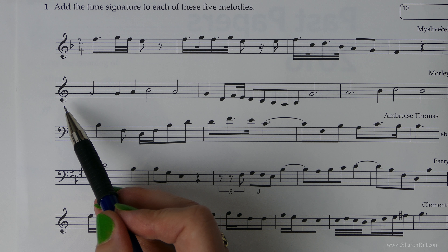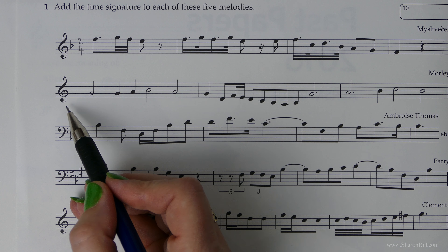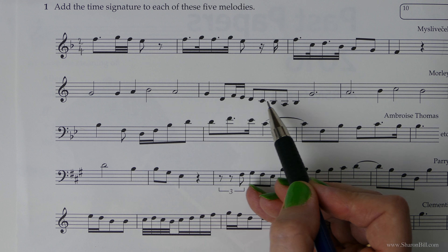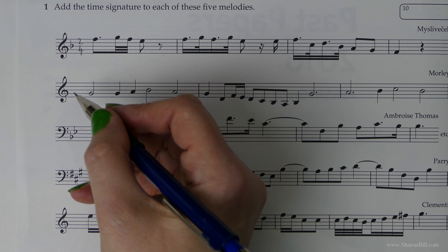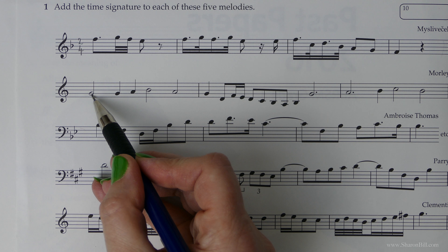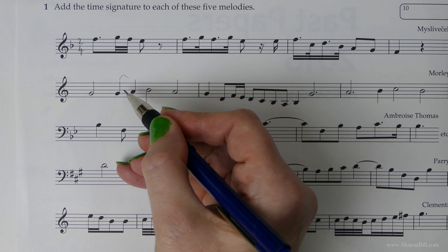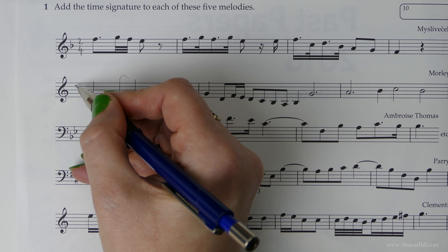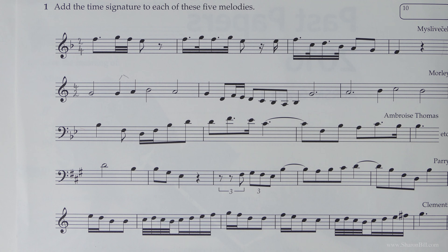This next exercise is most easily counted in minim beats or half notes. Counting through, we can see we've got one minim beat here, another here, one here and one here — so we've got four half notes or four minim beats per bar.